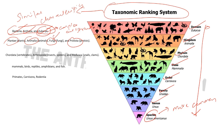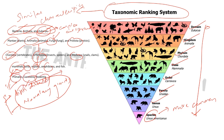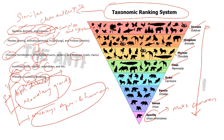Humans come under the domain Eukarya. This domain is classified into kingdoms: Plantae, Animalia, Fungi, and Protista — and humans clearly come under Animalia. Further, this kingdom is classified into various phyla such as Chordata, Arthropoda, or Mollusca; since we have vertebrates, we are classified under phylum Chordata. Chordata is classified into classes: mammals, birds, reptiles, amphibians, and fish. Humans are classified under mammals because mammals give birth to young ones directly and feed them with mammary glands.